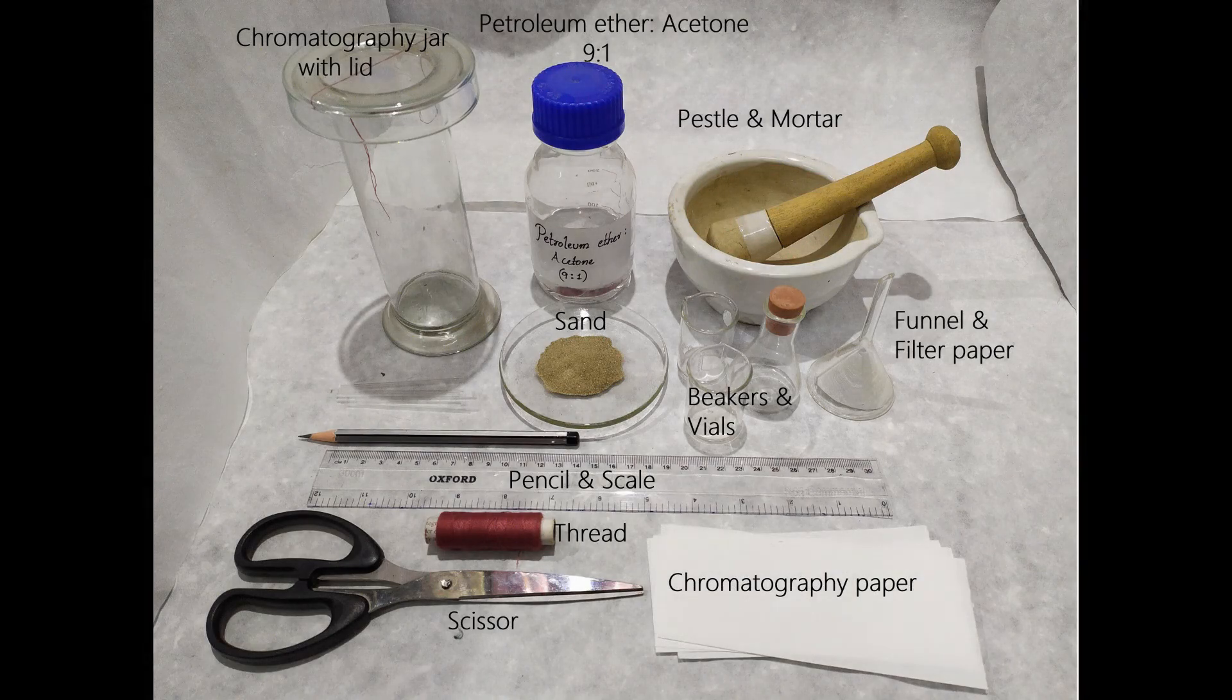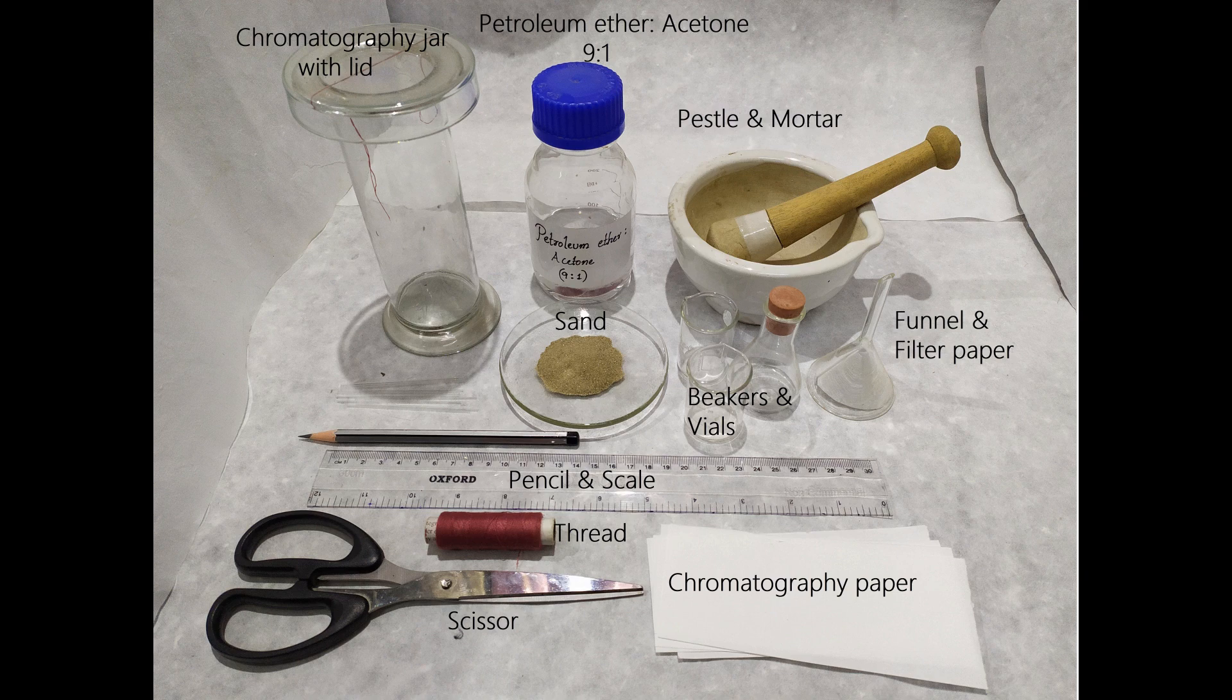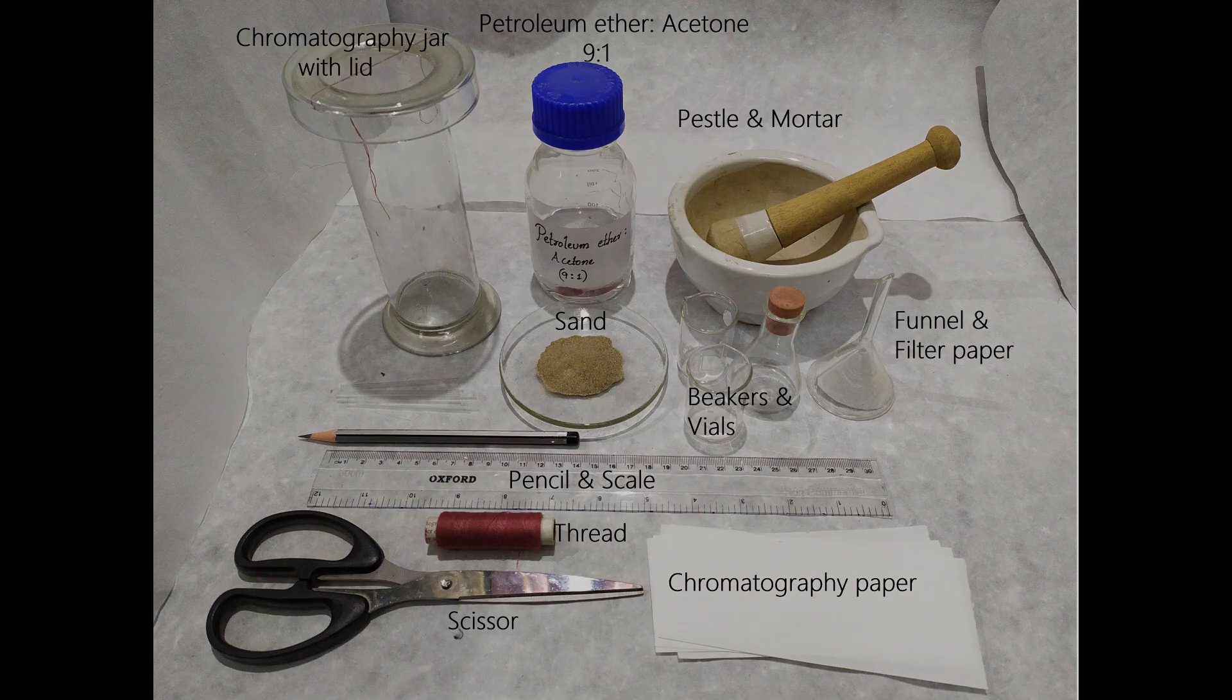Chromatography paper, chromatography jar with lid, petroleum ether and acetone mixture in a 9 is to 1 ratio, threads and tapes, pestle and mortar, sand, some fresh green leaves, funnel, filter paper, small beakers and vials, capillary tubes, scale and pencil and a pair of scissors.